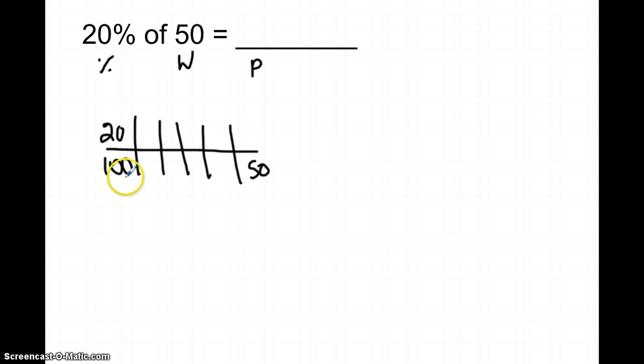In this case, some students might say, well 100 divided by 2 makes 50, 20 divided by 2 makes 10. If they don't, they might do something like this: 20 divided by 10 is 2, 100 divided by 10 is 10.